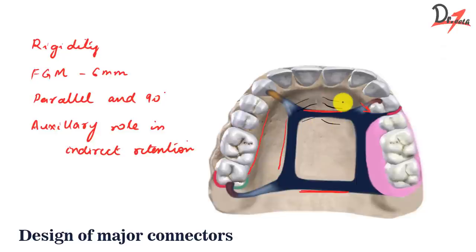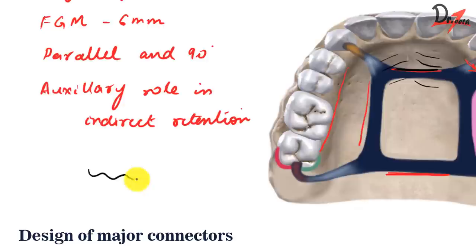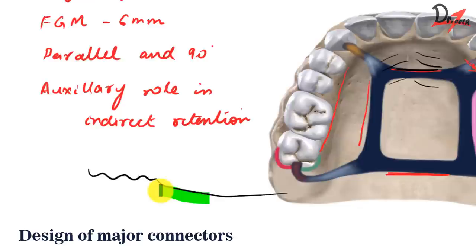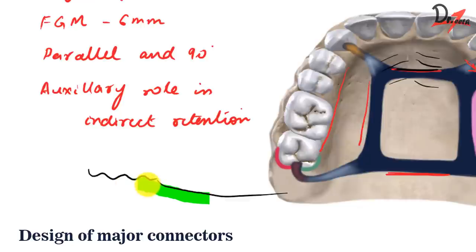Regarding where to end the major connector borders near the rugae: if we need to end it somewhere near a rugae, end it just before the most prominent rugae — on the posterior slope, not the anterior slope — because placing it on the anterior slope will be uncomfortable to the patient and the tongue will keep going there. The design is also dependent on tori or prominences in the palate; if there is a torus, we cannot give a complete palate, so that also determines the design.